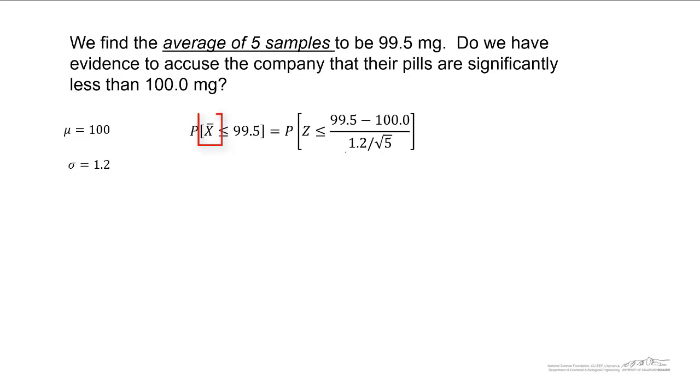There's a couple differences here. Now, instead of just x, we're looking at x bar. So we're looking at the sampling distribution, or the distribution of x bar. We can convert this to a z value, 99.5 minus 100. And now, instead of just dividing by sigma, we divide by sigma over root n, because that's the standard deviation of a sampling distribution.